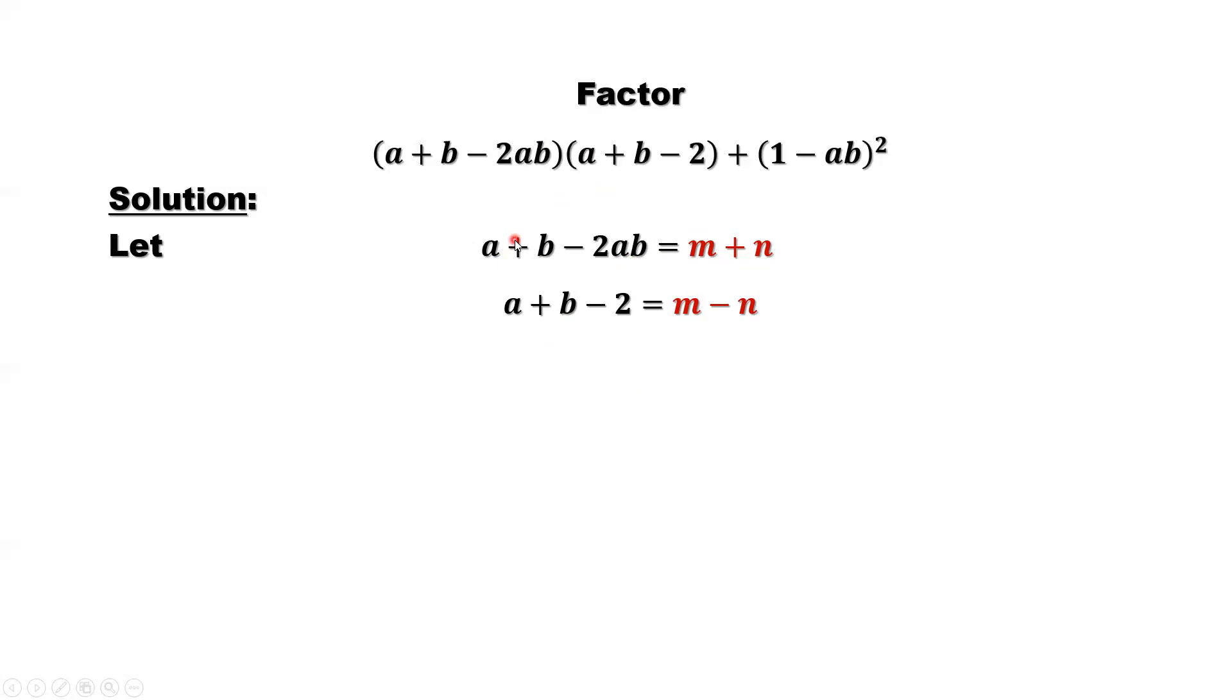In solving math problems, many times we try one method. If it's not working, we switch to different method. Let's solve the two equations for m and n first. How to get m, sum of the two equations. Right hand side, you can see negative n and positive n cancel each other. We will have 2m.